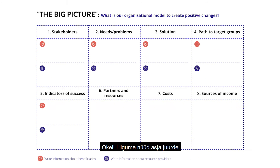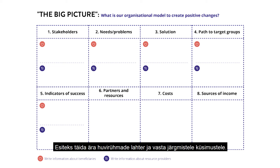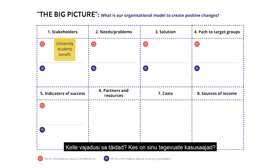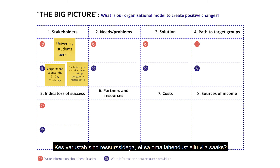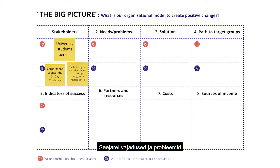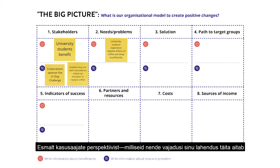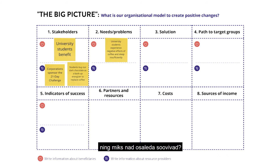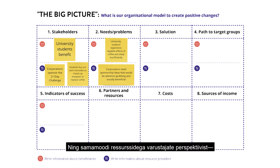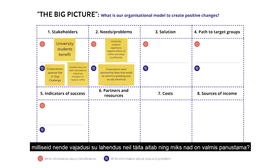Now let's get to it. First, fill in the stakeholders' cell and answer the following questions: Whose needs do you solve? Who are the beneficiaries of your activities? Who provides you resources to implement your solution? Then the needs and problems. From the perspective of the beneficiaries: what kind of needs does your solution help to solve, and why are they willing to participate? And from the perspective of resource providers: what kind of needs does your solution help to solve for them, and why are they willing to contribute?